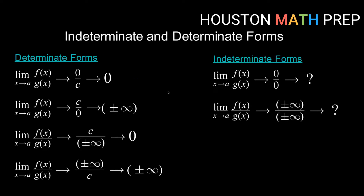Now relating those to our indeterminate forms: what if we get a quotient of zero over zero? So our limit as x goes to a of f(x) is going to zero, and our limit as x goes to a of g(x) is also going to zero. Here we're not sure exactly what happens — it is indeterminate, meaning we can't say, so we're going to have to take additional measures to figure it out. Similarly, if we get the limit of the numerator going to an infinite quantity and the denominator also going to positive or negative infinity, then we don't know what's going on and have to take additional measures.